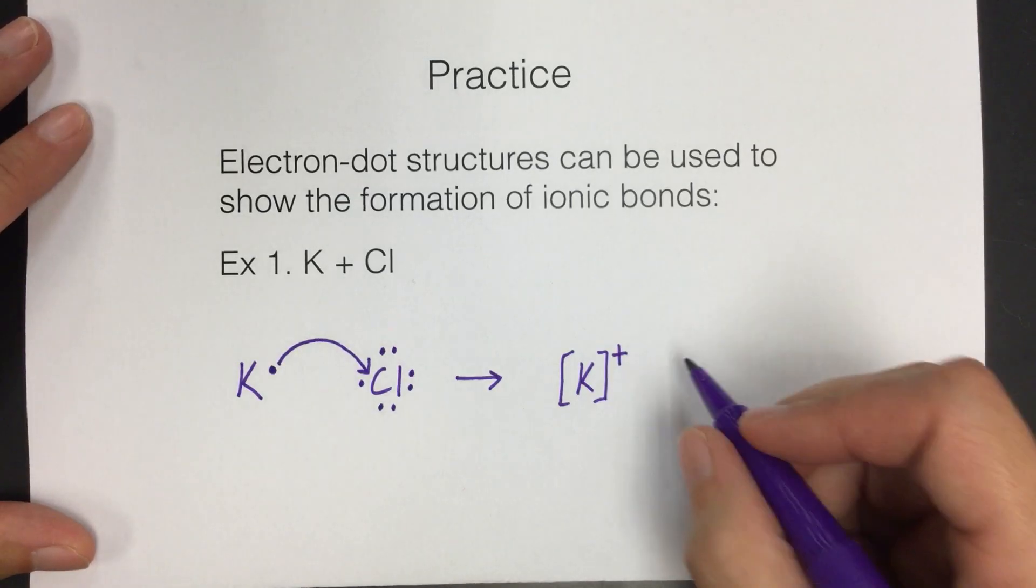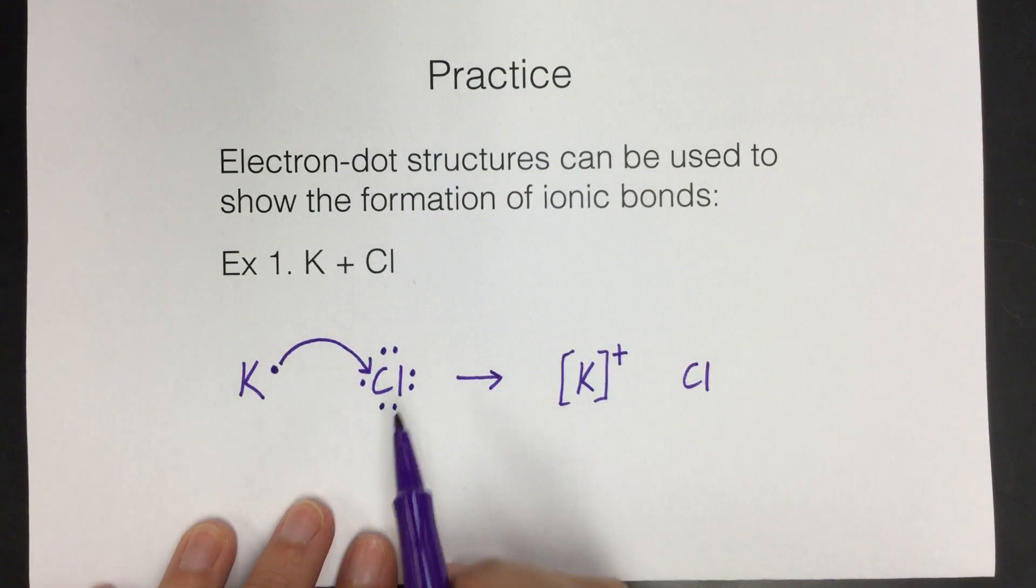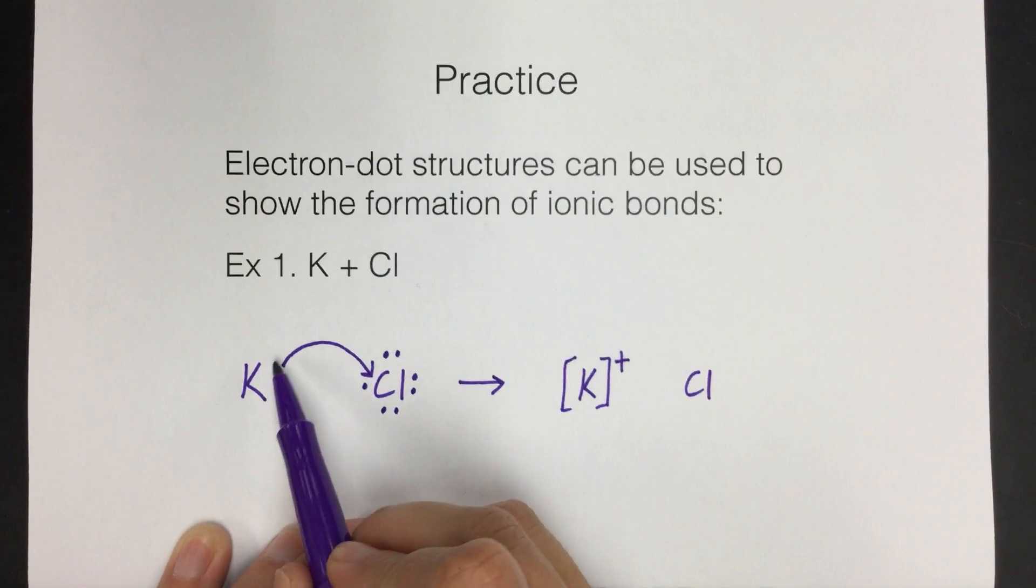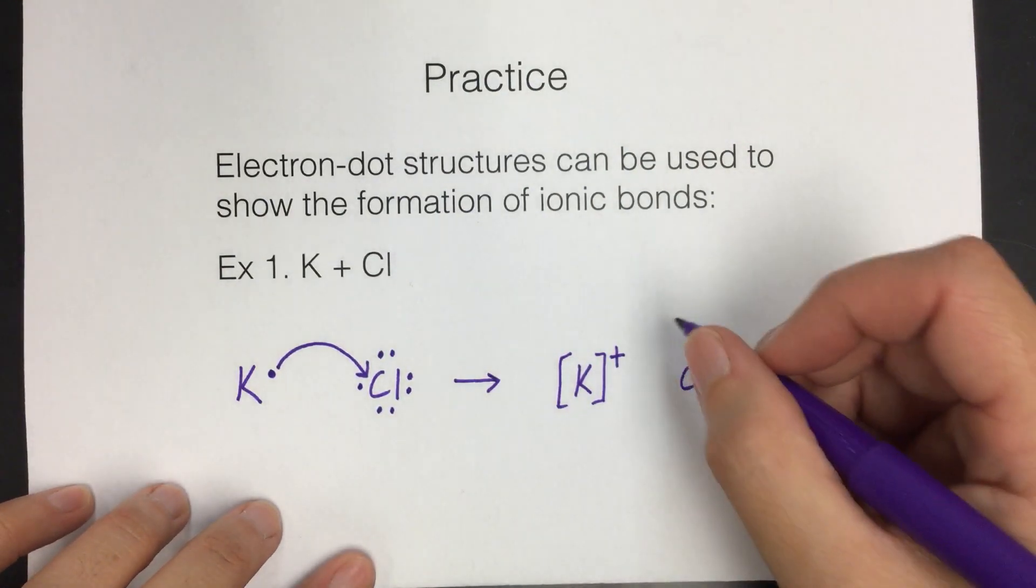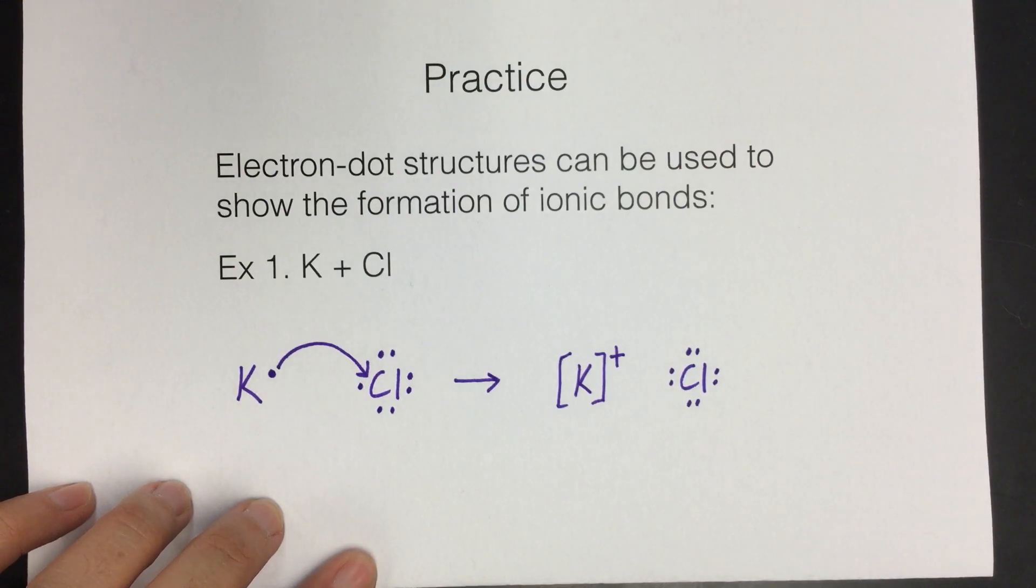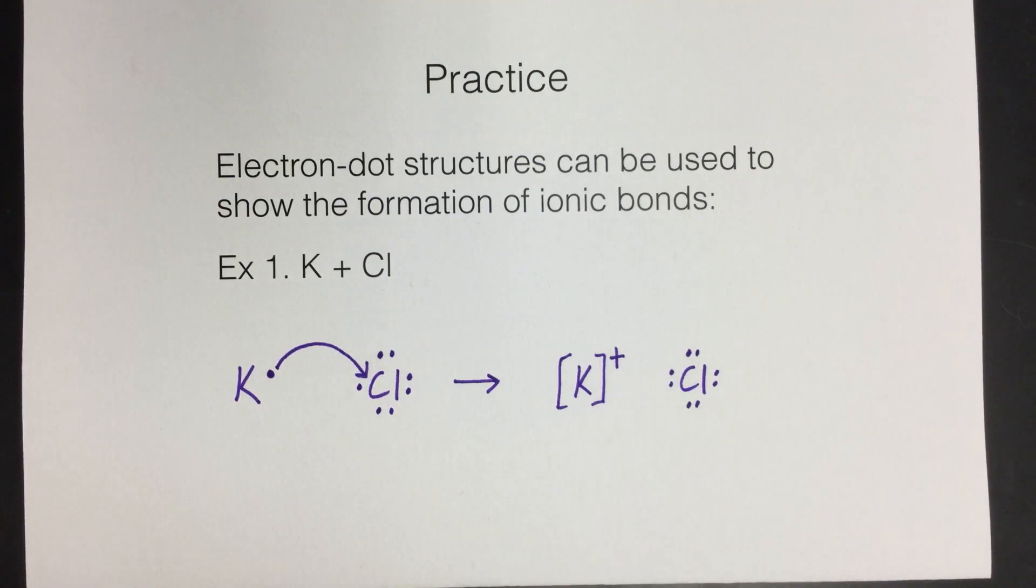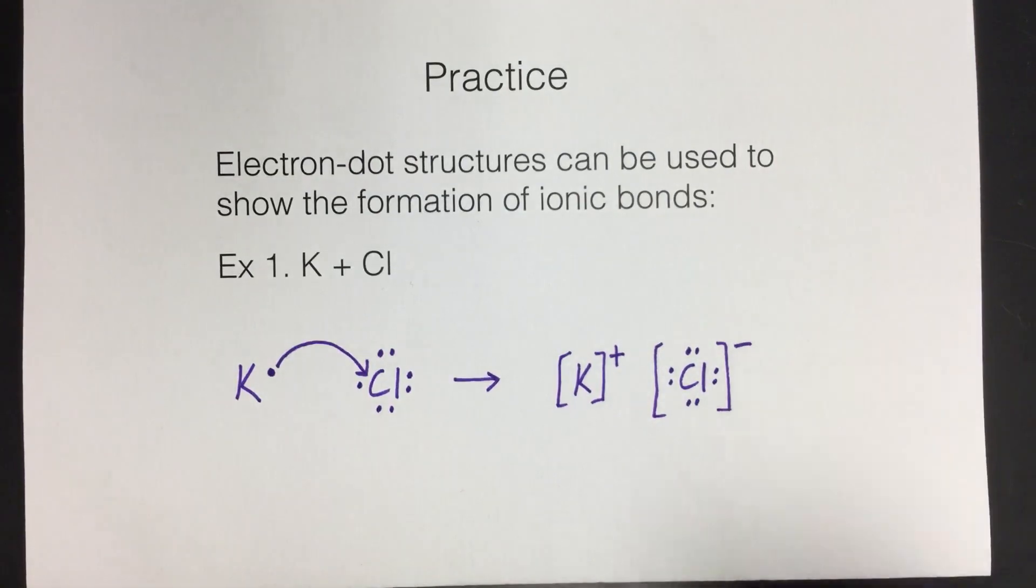Now we need to figure out what the chlorine looks like. So we have Cl, it started with seven electrons, but now remember it has received another electron from potassium. So now actually it's going to have eight electrons. So we'll draw all eight electrons around the Cl. Now it's full and happy. And what would be its charge if it gained one electron? Well, it will have a negative one charge. So if it has a charge, it also needs to be in brackets. And it has a charge of negative one. We don't write the one.